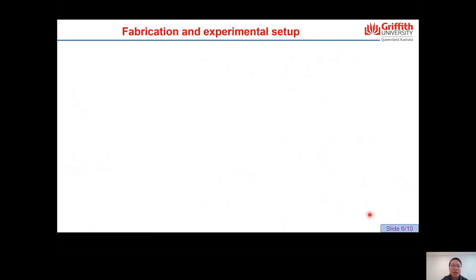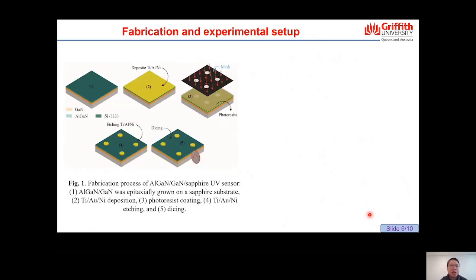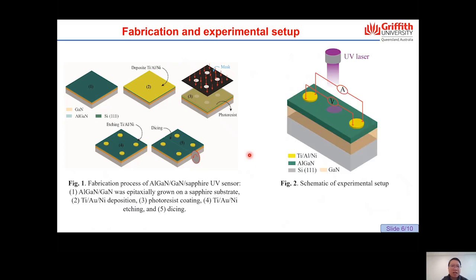The fabrication process of the AlGaN/GaN heterostructure-based photodetector starts with growing a 4-micron thick GaN layer on a 400-micron thick sapphire substrate using MOCVD technique. Subsequently, a 10-nanometer thick AlGaN was deposited on the GaN film to achieve the 2DEG at the AlGaN/GaN heterostructure interface. To form the metal electrode, three layers of metal including titanium, gold, and nickel were deposited by sputtering, followed by rapid thermal annealing in nitrogen ambient at 800 degrees for 30 seconds.